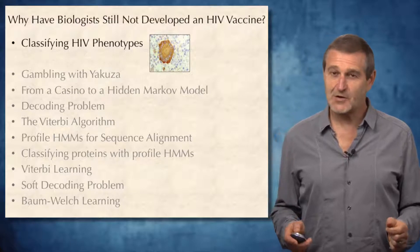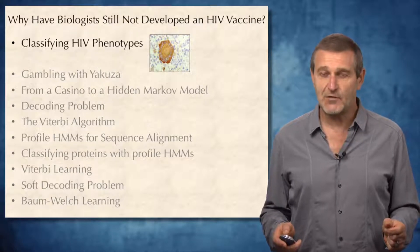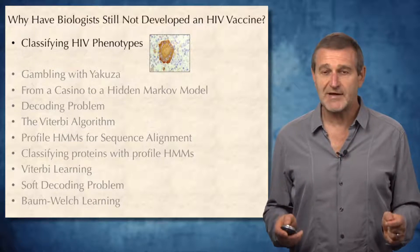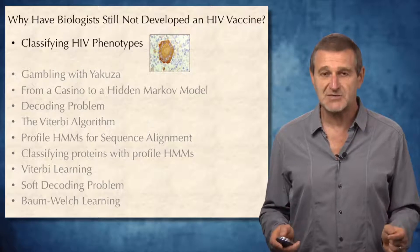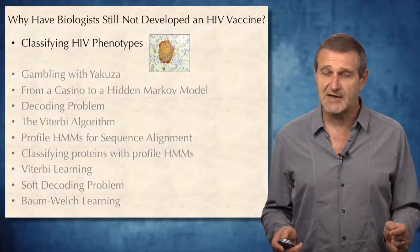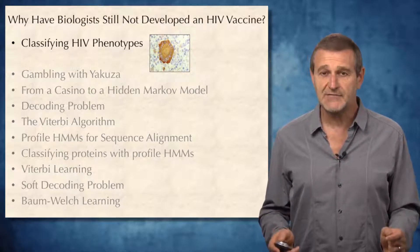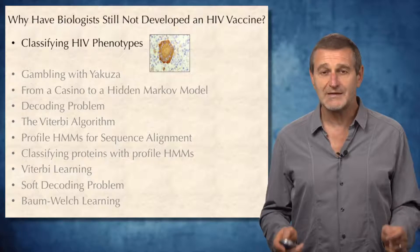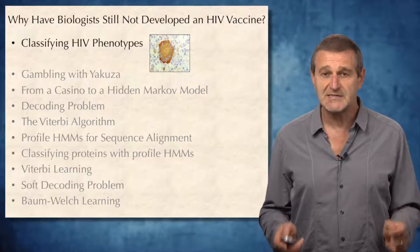Today we will talk about the arms race between researchers trying to develop an HIV vaccine and the rapidly evolving human immunodeficiency virus. This discussion will bring us to the challenge of comparing highly diverged viruses from different patients, or comparing highly diverged proteins from species separated by millions of years of evolution. We will learn that traditional sequence alignment algorithms often fail to detect subtle similarity between highly diverged sequences. To address this limitation, we will develop a new computational framework called Hidden Markov Models, whose applications in bioinformatics extend well beyond sequence comparison.